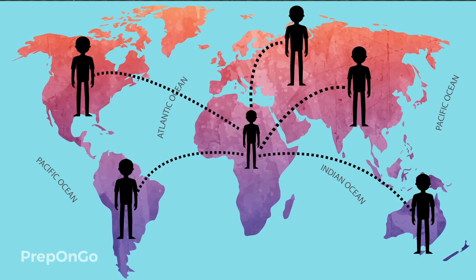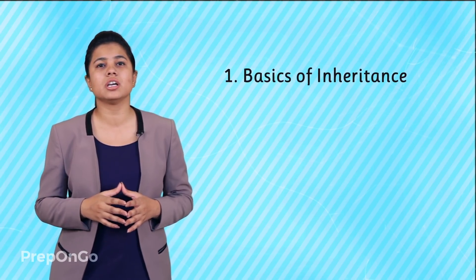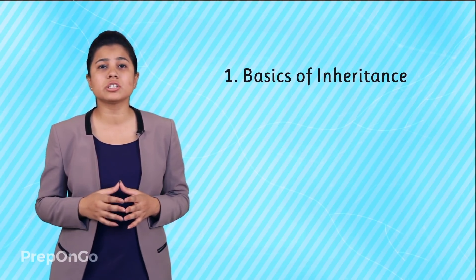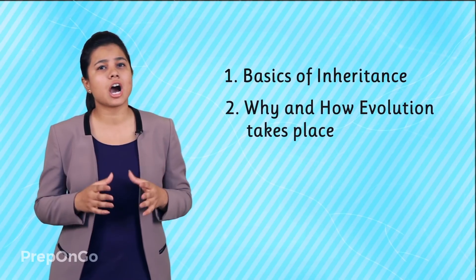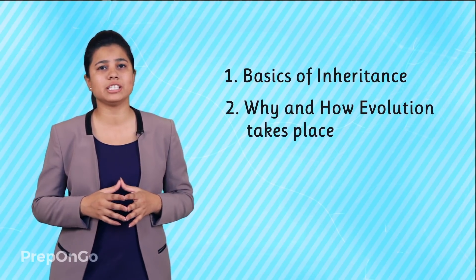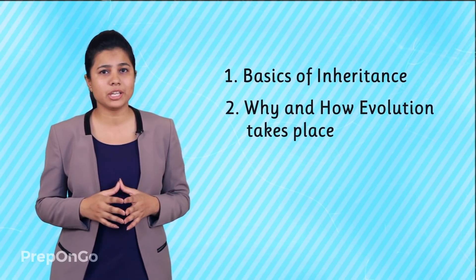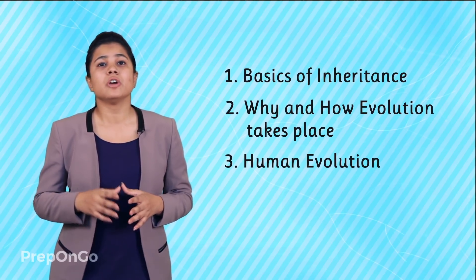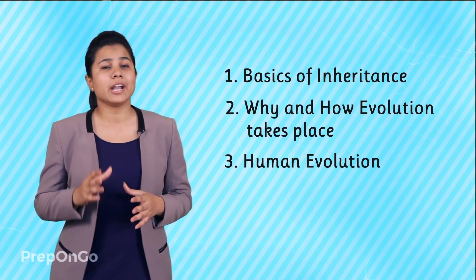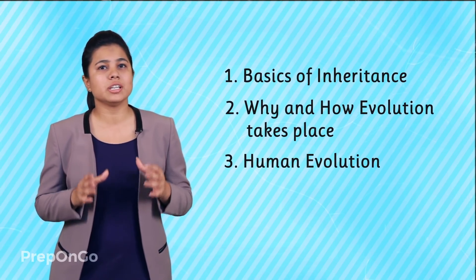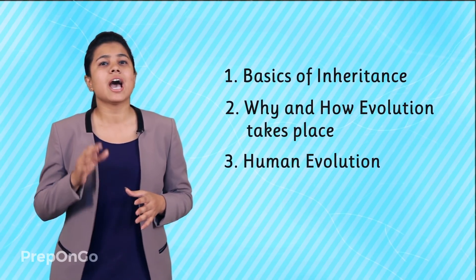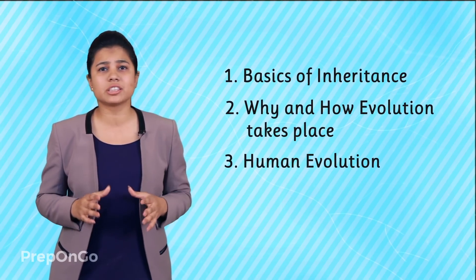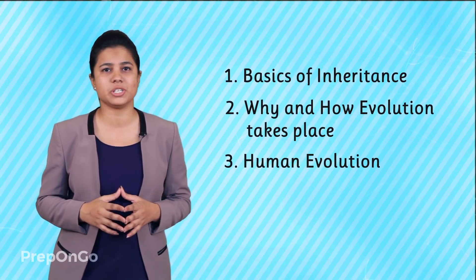With this, we come to the end of this chapter. In this chapter, we have seen the basics of inheritance. We have also studied why and how evolution takes place, and had a brief look at the evolution of humans. We now know that evolution is the generation of diversity and it has nothing to do with the progress of a species.